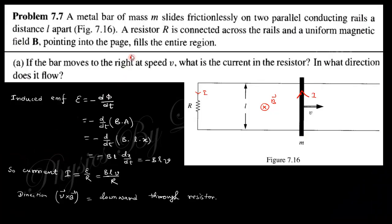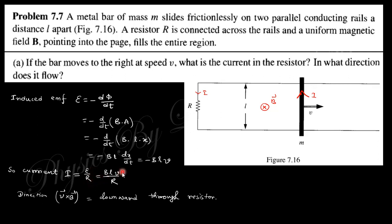Let us start with question 7.7, which says a metal bar of mass M slides frictionlessly onto parallel conducting rails a distance L apart. The rails go through this direction where resistance R is connected. The magnetic field is pointing into the page and fills the entire region. If the bar moves to the right with speed V, what is the current in this resistor? The induced EMF due to the motion of this bar is minus dΦ/dt, and Φ = B·A = B·L·x. So the EMF is BLV, and the magnitude of the current is BLV/R.